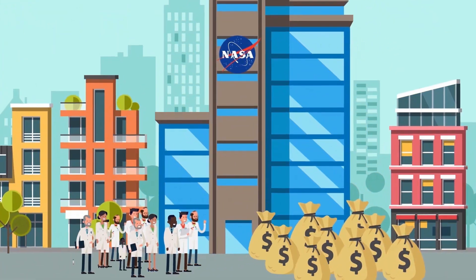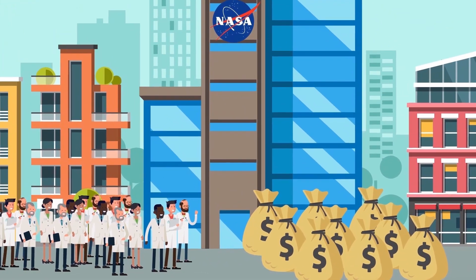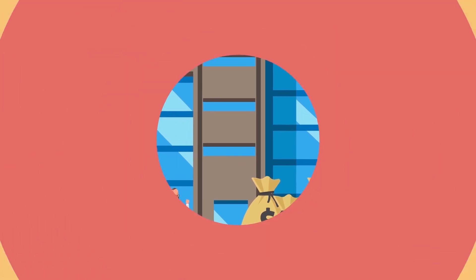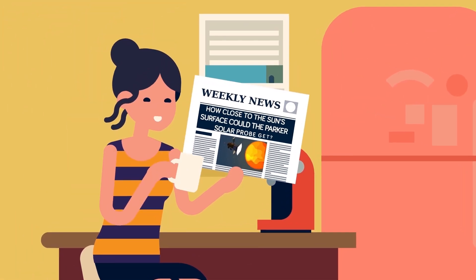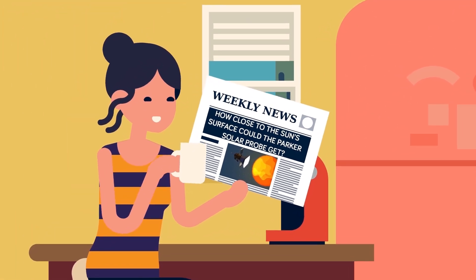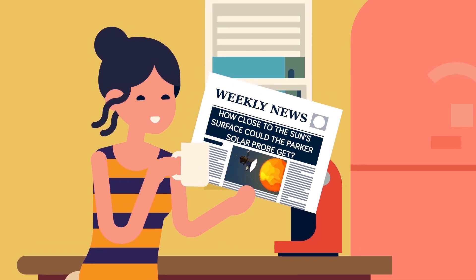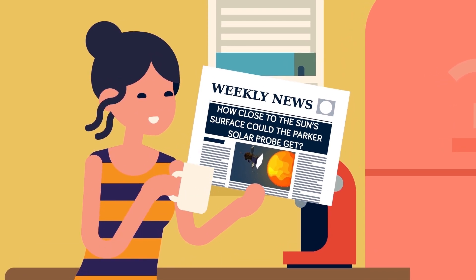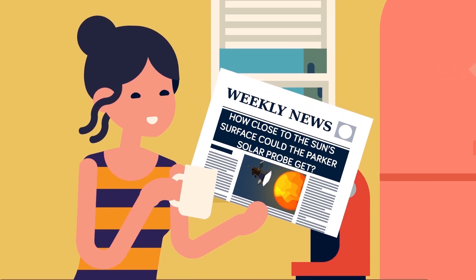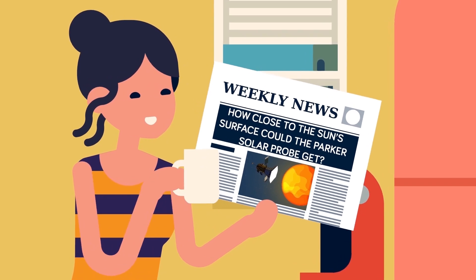Lastly, the Parker Solar Probe is only meant to get close to the sun's surface, not rocket directly into the sun itself. That means that this long, arduous mission doesn't even have to cancel out all of the Earth's momentum initially, just most of it.